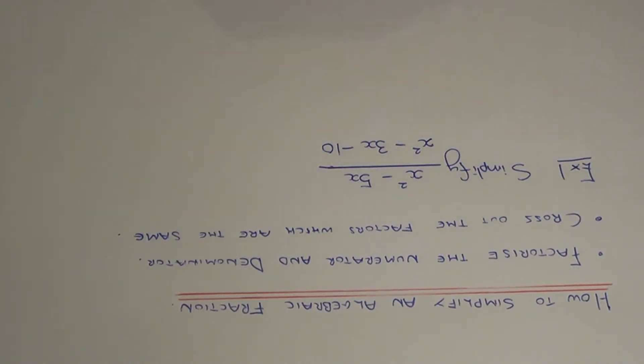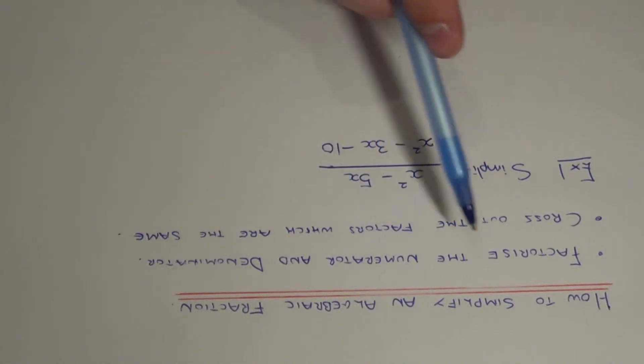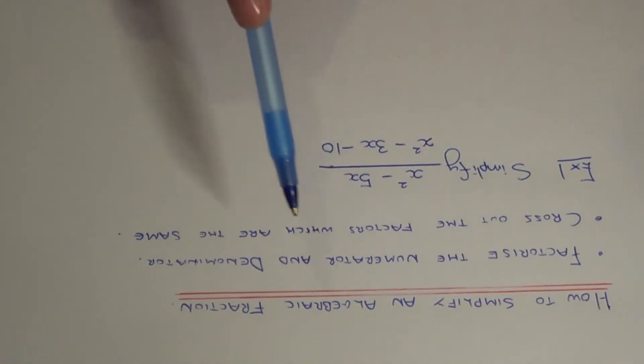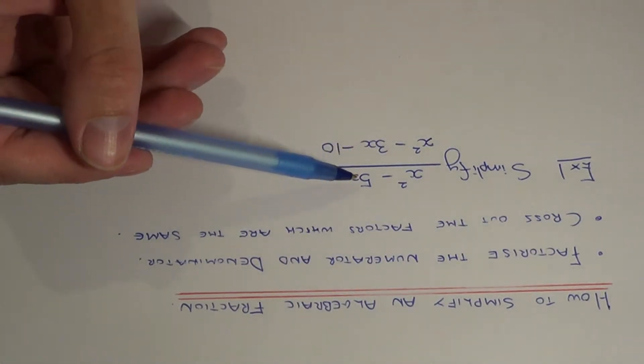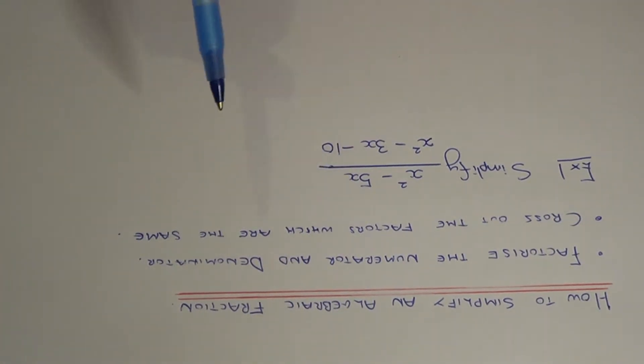So basically all we have to do to simplify an algebraic fraction is we need to factorise the numerator and denominator of the fraction, and then you should have two factors which are the same on the top and the bottom and you can cancel these two factors out.